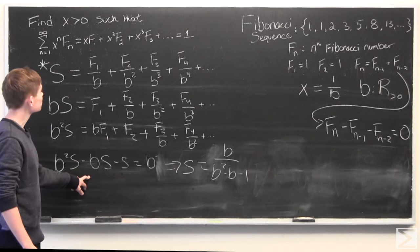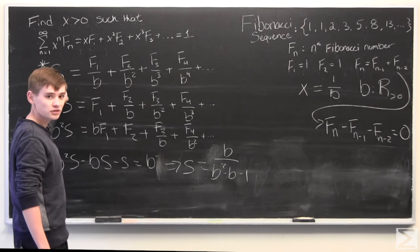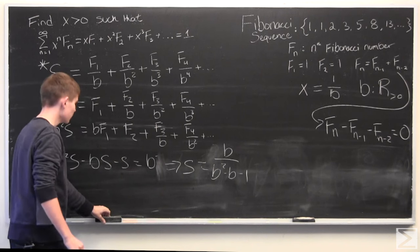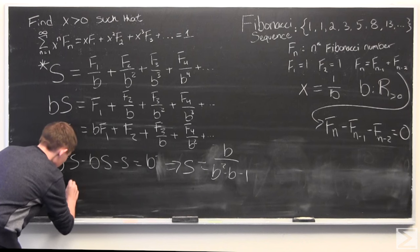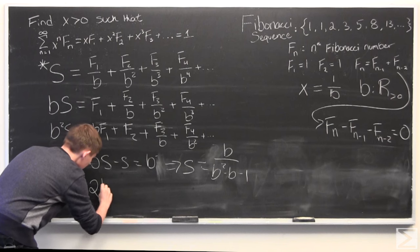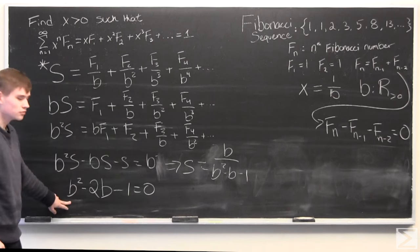Now, since we are looking to have this sequence equal to 1, we can plug in 1 for this. And what we end up having to do is solve the quadratic equation b squared minus 2b minus 1 is equal to 0.